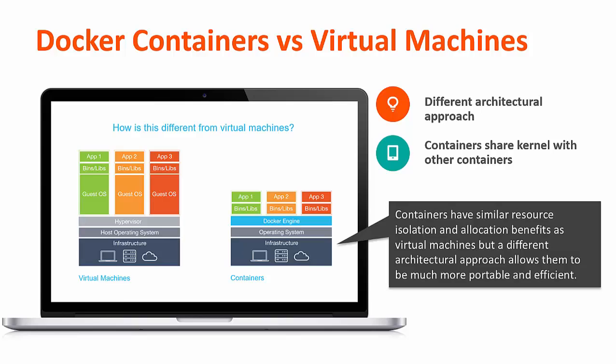A lot of folks want to know the difference between containerized technology versus virtualization. With virtual machines, when you have an application running, it's dependent on a guest OS in a virtualized environment. You'll have your hypervisor, or host operating system, and then provision these VMs, and each one of those is a particular OS. With a Docker container strategy, you have the operating system and then a Docker engine on top of that, and each of the containers is not dependent on an OS — they can run independently in that containerized environment, which makes it very desirable and efficient.